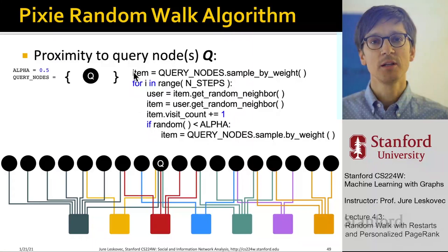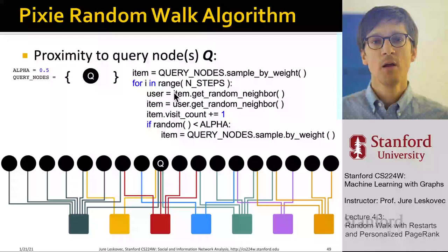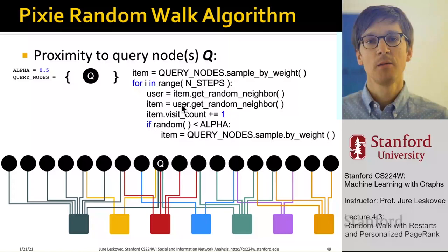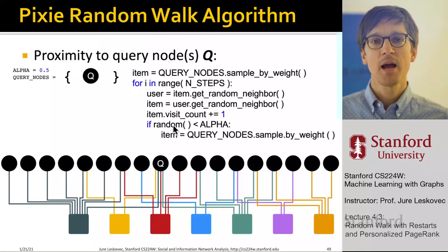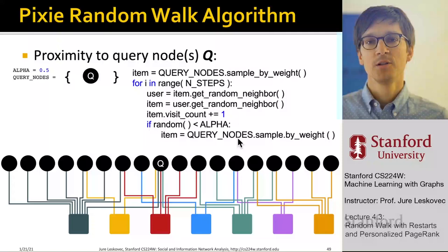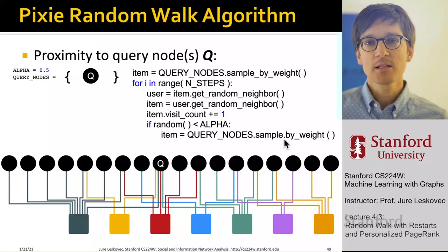The pseudocode is: start at a query node, pick a random user, pick a random item, increase the visit count of that item, then flip a biased coin. If the coin says restart, jump back to the query nodes — uniformly at random to any of them, or sampled by weight if they have different weights. That is the notion of a random walk with restart.